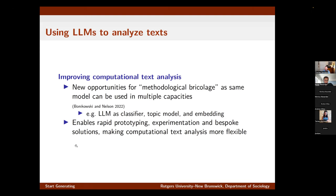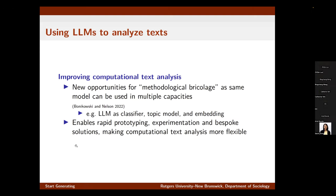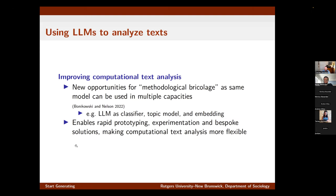Beyond classification, these new models really open up lots of opportunities for using computational text analysis in different ways — performing what Bart Bonachowski and Laura Nelson have called methodological bricolage, using different computational techniques together in the same paper. Large language models can be used as classifiers, as topic models, and we can do other things like extracting embeddings. I argue this enables more rapid prototyping, experimentation, and potentially the development of bespoke solutions to different problems without necessarily needing to learn very esoteric areas of computer science, making computational text analysis much more flexible and accessible.